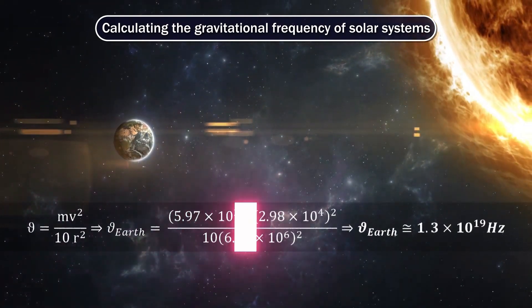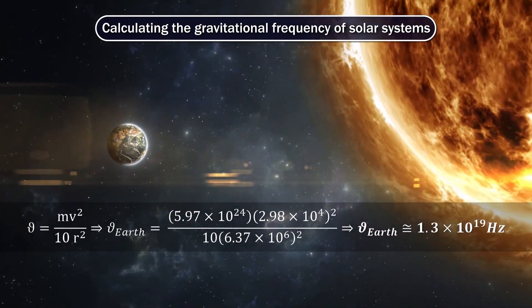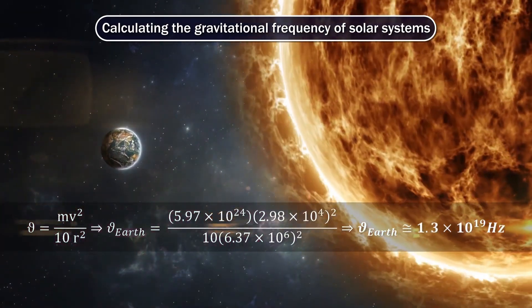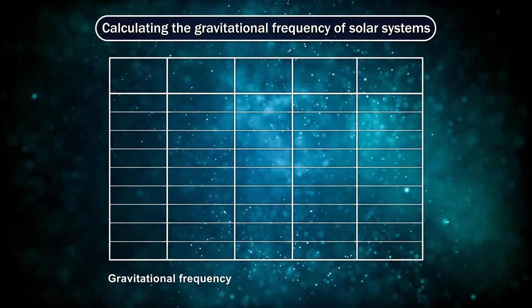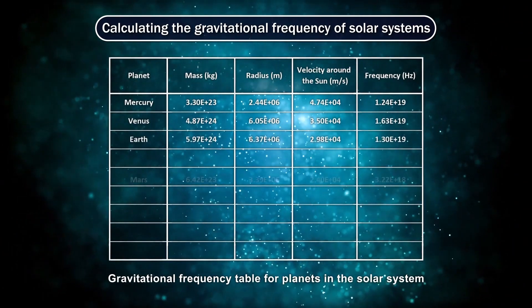According to the last formula, we compute the gravitational frequency between Earth and Sun. And the calculated amount of gravitational frequency between the sun and the planets of the solar system should be as follows.